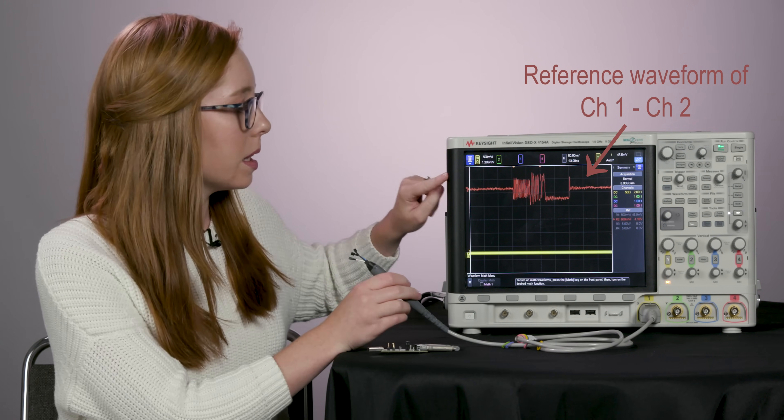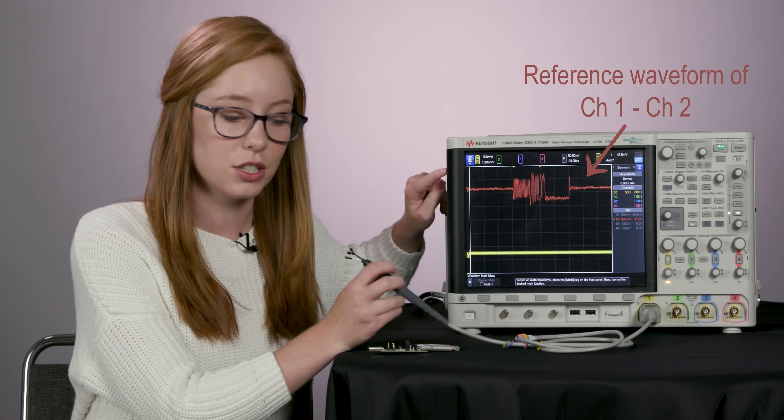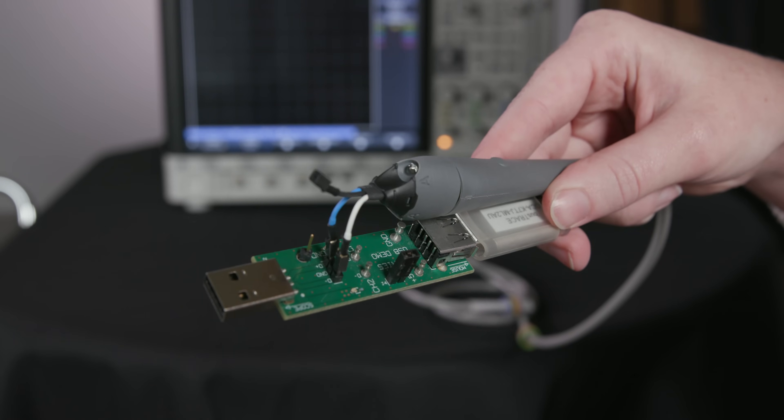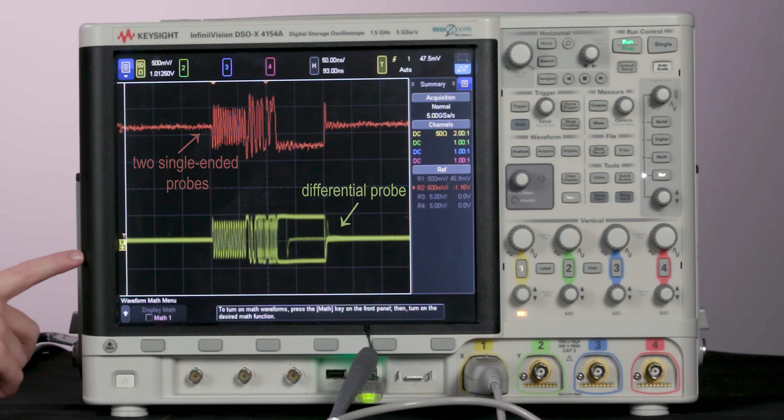This way we can compare it to what we got with the two single-ended probes in the math function. So I've attached one pin on the differential probe to one signal and the other pin to the other signal. And on screen, we're automatically seeing the difference between these two signals.